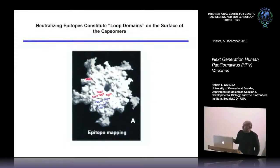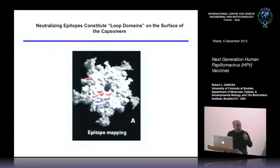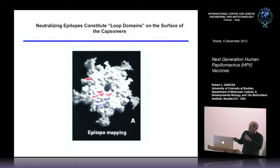Mapped onto the pentamer are studies from Neil Christensen's group showing residues involved in several neutralizing monoclonal antibodies against HPV-16. The key points: these neutralizing epitopes are non-contiguous peptide sequences — coming from different parts of the molecule together — so you need a native particle or native pentamer to get neutralizing antibodies. Secondly, the neutralizing epitopes are available on the surface of a pentamer; you don't need a whole particle. Every pentamer has neutralizing antibody sites.